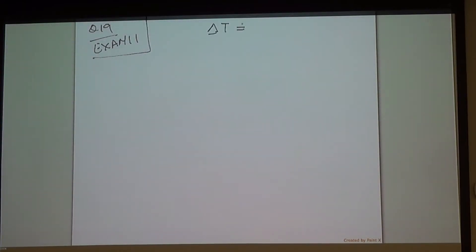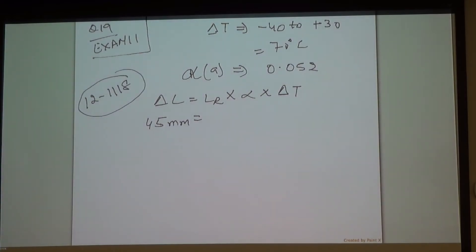Temperature change happened from minus 40 to plus 30. So it is 70 degree C. PVC conduit has an expansion joint or expansion coefficient. Let's name that as alpha actually, but we call it A. What is the expansion coefficient? 0.052. Perfect. And then formula is length of the raceway times the expansion times delta T. The rule says I don't want to have an expansion joint. Up to what length I don't need to have an expansion joint? 45 mm.